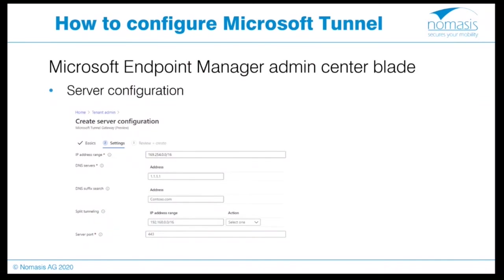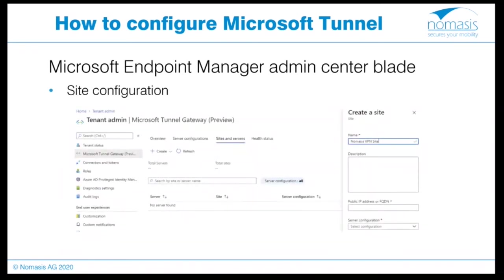The Microsoft Tunnel section within Microsoft Endpoint Manager Admin Center is the starting point for configuration. The Admin Center blade for Tunnel Server configuration lets you set up the IP address range in CIDR format to assign IP address leases to devices, IP addresses for DNS servers used by device DNS requests, and optionally a DNS suffix search for looking up default domains. Also optionally configured is split tunneling for IP addresses that should not be routed through the tunnel. The port for the gateway is also configured here. The site configuration blade defines the site name, description, public IP address or FQDN, and server configuration — the public IP must be publicly routable and the FQDN publicly resolvable.